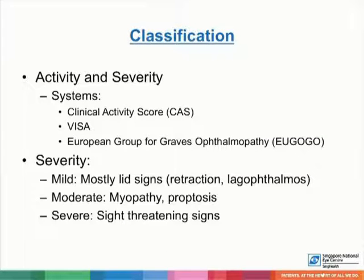There are many different systems for classifying thyroid eye disease, the basis of which is classifying activity and severity. The Clinical Activity Score, VISA, and uGoGo systems help to classify activity and severity. Severity is usually classified according to mild, moderate, and severe.